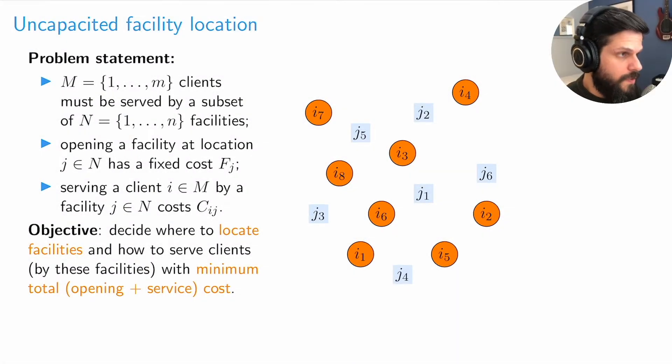Now let's look at the uncapacitated facility location problem. The idea is that we have a collection of clients that must be served using facilities that we locate at candidate locations. You can see in this picture that the light blue points are candidate locations and the orange points are our clients or places that must be served.